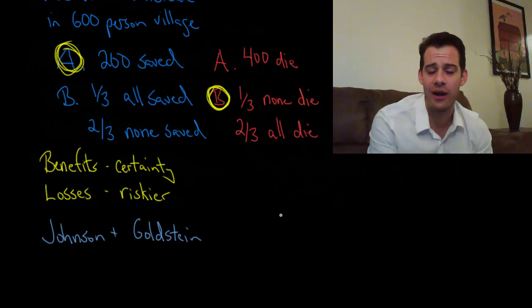So this shows how framing really does matter and we have to think about how we design questions, how we design possible programs, whether we focus on the benefits or the losses. And that's going to influence the decisions that people make and how risky people might want to be in making those decisions.